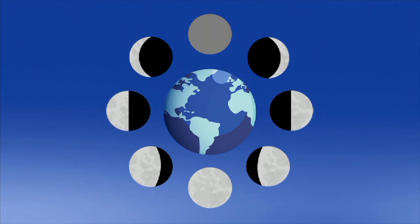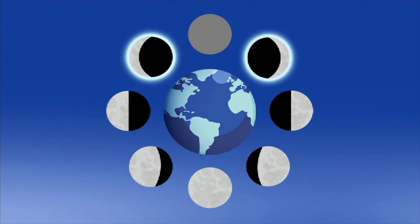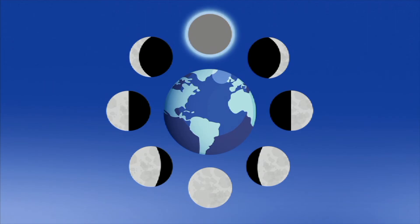The next phase is called waning crescent. Again, this phase looks very much like waxing crescent, except it's getting smaller to us on Earth. And finally, we return to the New Moon.